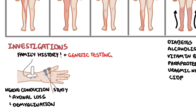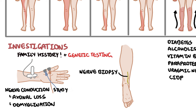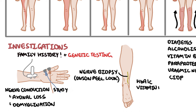A nerve biopsy is sometimes performed, and what you see is repeated demyelination and remyelination events in large nerve fibers — this is also known as the onion peel appearance. Investigations should also include those that rule out other differentials, such as HbA1c for diabetes, vitamin B12 levels, and a lumbar puncture to look for chronic inflammatory demyelinating polyneuropathy.